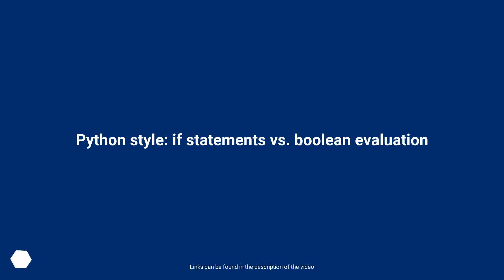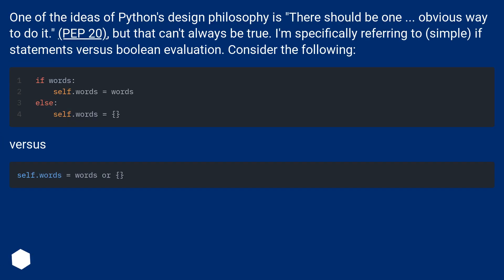Python style if statements versus boolean evaluation. One of the ideas of Python's design philosophy is there should be one obvious way to do it — PEP20 — but that can't always be true. I'm specifically referring to simple if statements versus boolean evaluation. Consider the following.